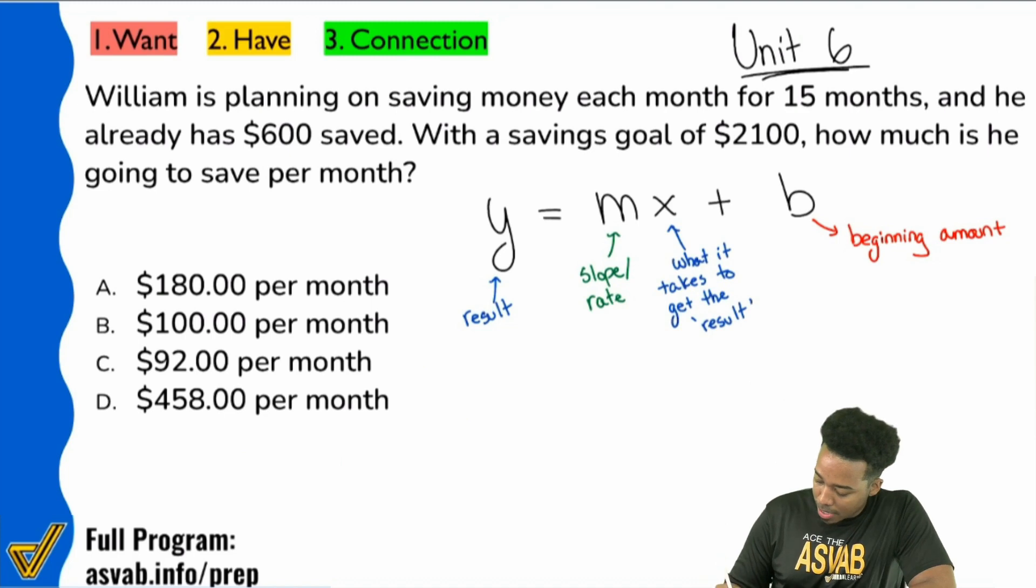But here we go. So everybody, I'm going to go through the problem and I want you to point out where it belongs. William is planning on saving money each month for 15 months. Everybody, 15 months. What's that going to be? The y, the m, the x, the b? Which one is that? 15 months, which one is that going to be?